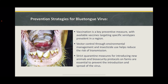Insecticide application in areas with high vector prevalence contributes to reducing the likelihood of transmission. Implementing robust biosecurity protocols is crucial to prevent the introduction and spread of BTV within livestock populations. This includes quarantine measures for introducing new animals, restricting movement during peak vector activity, and maintaining hygiene practices to reduce the risk of transmission. Educating livestock owners, veterinarians, and other stakeholders about BTV prevention strategies is very important. Effective communication campaigns can increase awareness about vaccination benefits, biosecurity practices, and the role of individuals in preventing disease spread.